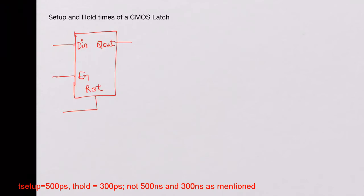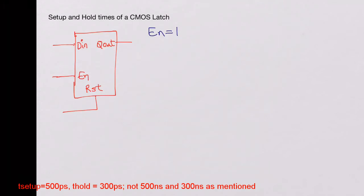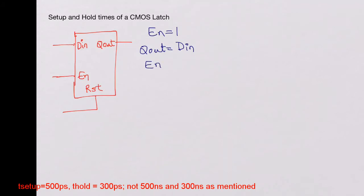We know that when enable is high, the latch passes whatever is applied on DN to Q out — so Q out is equal to DN. If you have a 0 on DN, Q out is 0; if you have a 1 on DN, you will have a 1 on Q out. When enable is 0, Q out at the next state equals Q out at the current state — it holds the previous state of the latch.